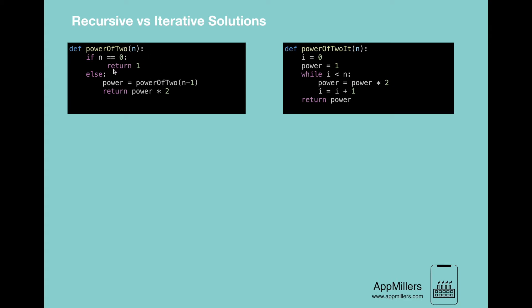The second point is that a conditional statement decides the termination of recursion, while a control variable's value decides the termination of iteration. In this case the value of i decides termination. Also, infinite recursion can lead to a system crash, whereas infinite iteration consumes CPU cycles.